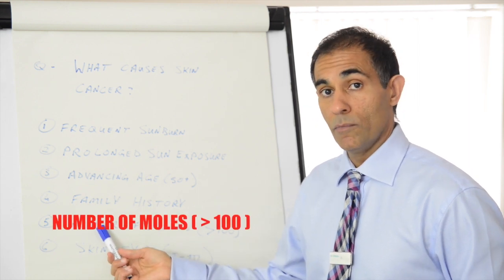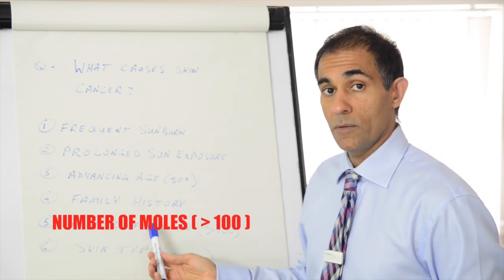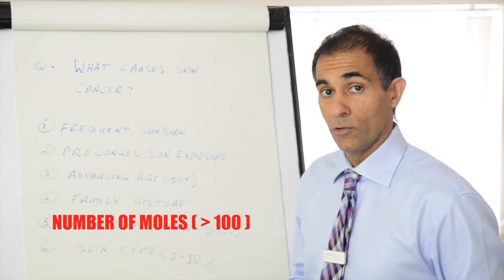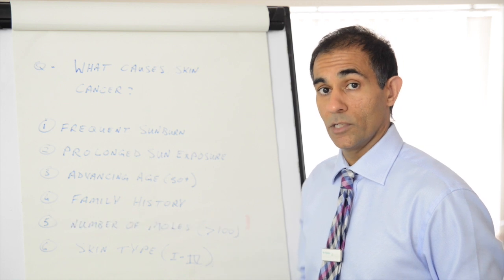The fifth is number of moles. This is genetically determined. This is not something you can do anything about but generally a mole count of more than 100 does increase your risk a little bit above average.